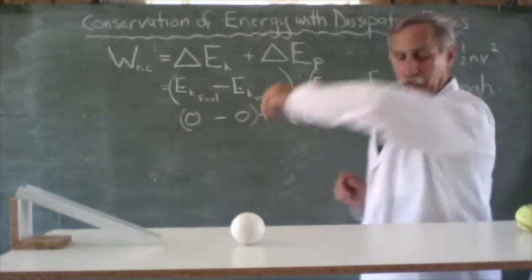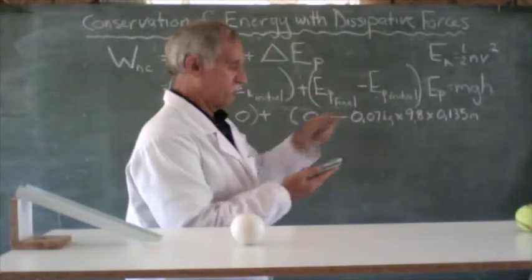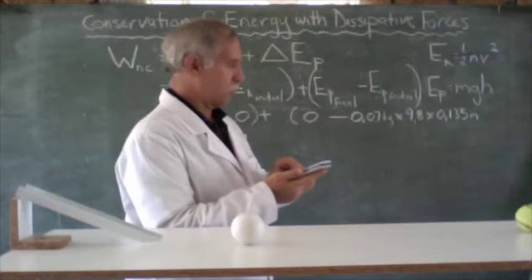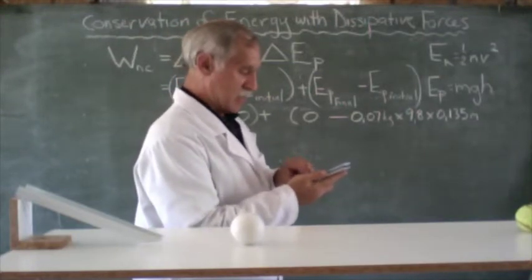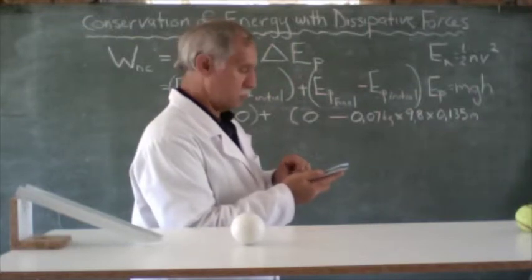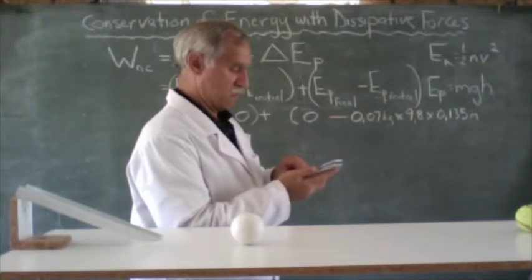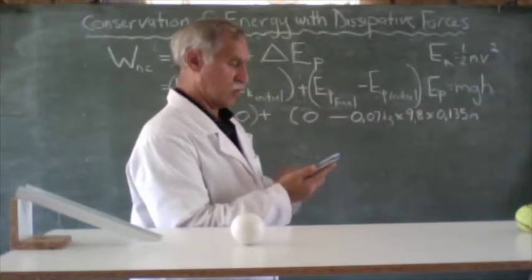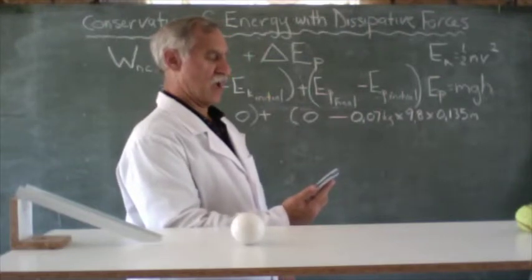So multiplying that all together, we've got 0.07 times 9.8 times 0.135, and we get 0.0926.